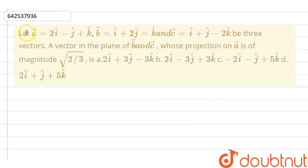Hello everyone, in this question we have let vector a as 2i cap minus j cap plus k cap, vector b as i cap plus 2j cap minus k cap, and vector c as i cap plus j cap minus 2k cap be three vectors.